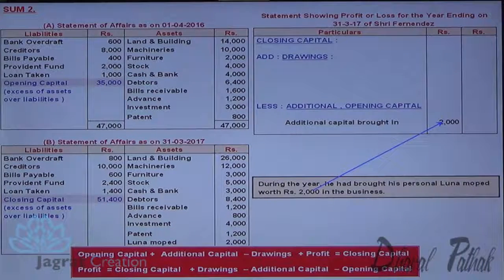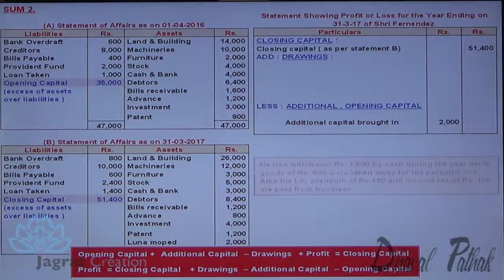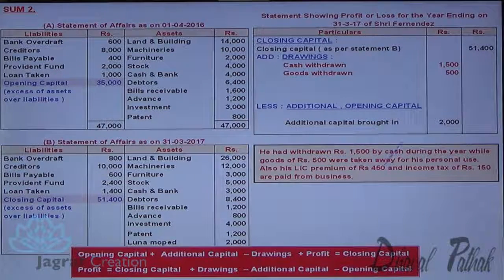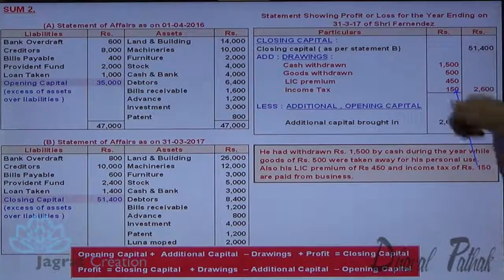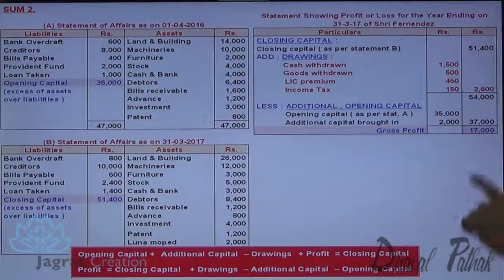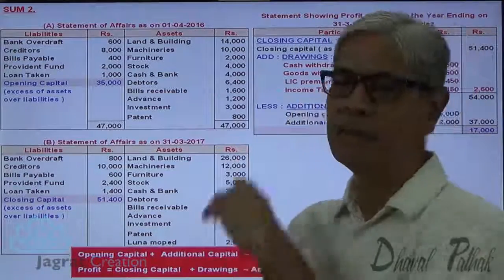The additional capital brought by way of moped, and the closing capital of 51,400. He has withdrawn 1,500 in cash, goods of 500 were withdrawn, personal expenses including LIC premium paid, and income tax paid of 150. These are the various amounts withdrawn by the owner as drawings. Drawings are added, and opening capital along with additional capital are deducted — 37,000. This gives the profit for the accounting period ended 31st, 2017, i.e., profit for 2016–17.